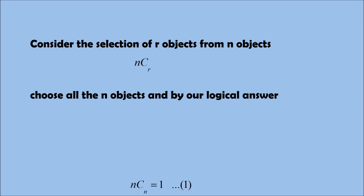Let's go for method 2. Consider the selection of r objects from n objects. For example, choose all the n objects and by our logical answer, what can we get? nCn is equal to 1 because we have to choose all the n objects from the given n objects. There is only one way, there is only one choice.